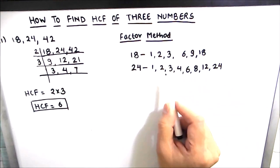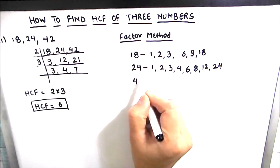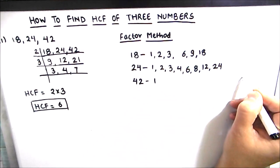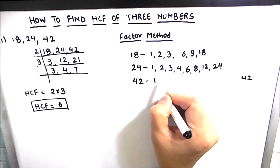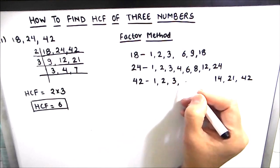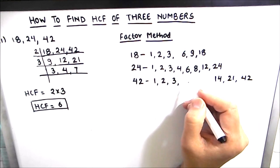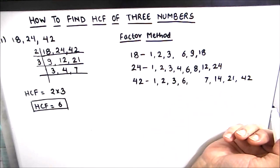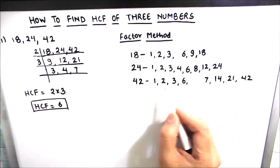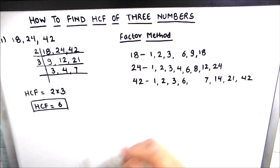Now we write the factors of 42. 1 and 42, then 2 and 21, then 3 and 14 (since 3×14=42). 4 is not a factor, 5 is not a factor. 6 is a factor since 6×7=42. So the factors of 42 are 1, 2, 3, 6, 7, 14, 21, and 42.